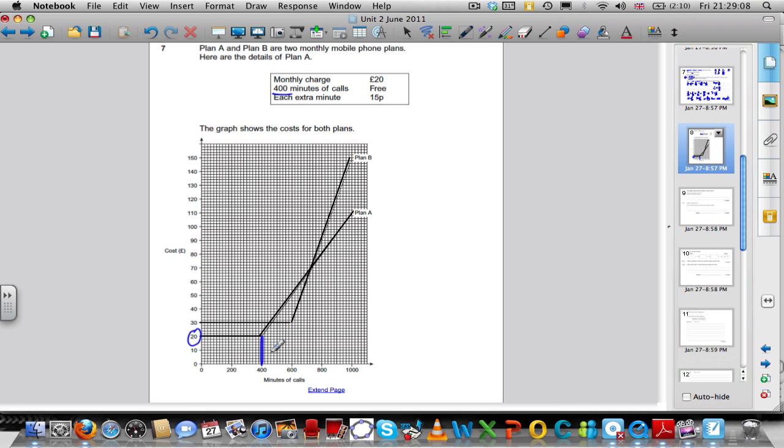£20 is charged every month, no matter how much calls you make, because 400 minutes are free. So up to this point here, there are no charge for minutes, but it's a £20 flat fee rate. Every extra minute is 15p. How could you work that out? You could say, for example, that in 200 extra minutes, there is exactly an extra charge of £30.